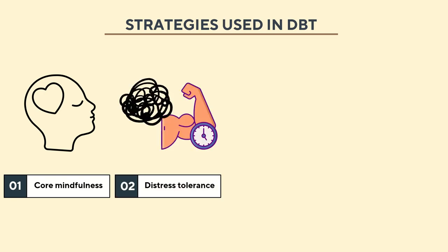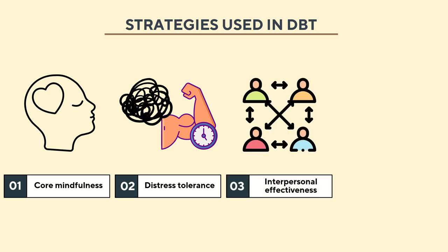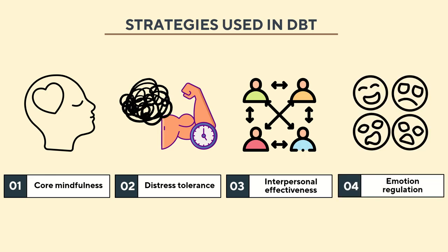The second strategy is distress tolerance, where an individual learns the art of acceptance and change. Interpersonal effectiveness helps patients learn how to interact with the people around them, manage personal relationships, and handle challenges that create a stressful environment. Lastly, emotion regulation helps patients learn to control emotions such as anger, depression, anxiety, and frustration. Once a patient has learned how to manage their feelings, they decrease their vulnerability to painful emotions caused by situations entirely out of their control.